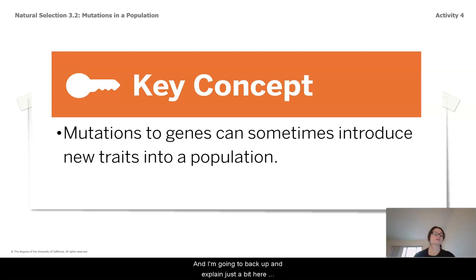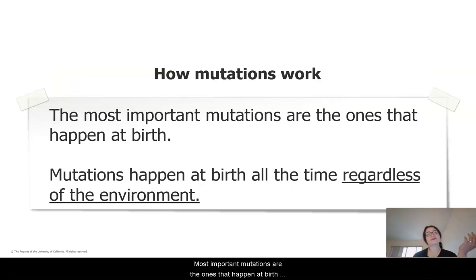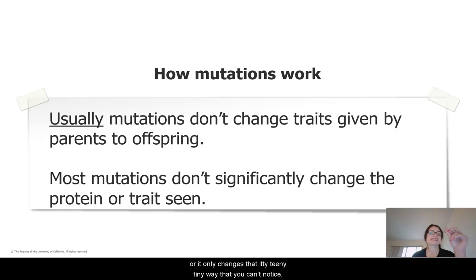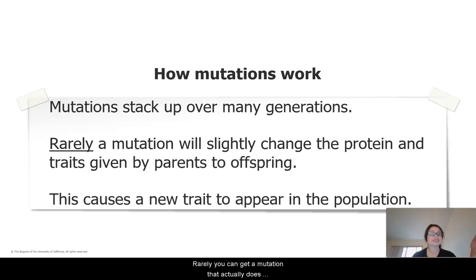I'm going to back up and explain just a bit here because in my experience, this is one of the most misunderstood parts of natural selection. People think you get a mutation and it's always this huge, big change in things. That's not really how it goes. The most important mutations are the ones that happen at birth, and this happens all the time regardless of environment. Usually the mutation either doesn't change the trait, or it only changes it in an itty-bitty-tiny way that you can't notice. But because mutations stack up over generations, rarely you'll get a mutation that actually does significantly change the protein and will change the traits that you see. And this is what's causing new traits in a population.